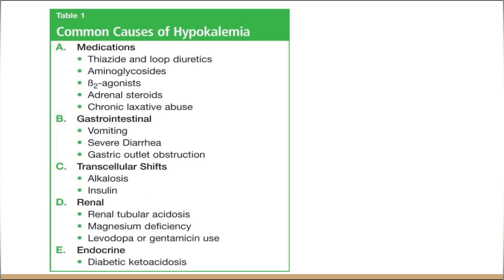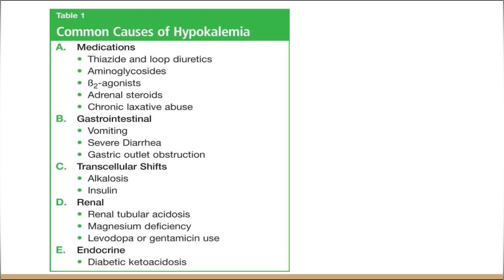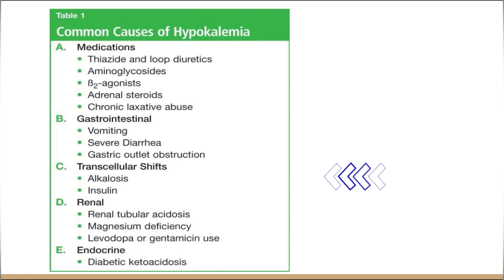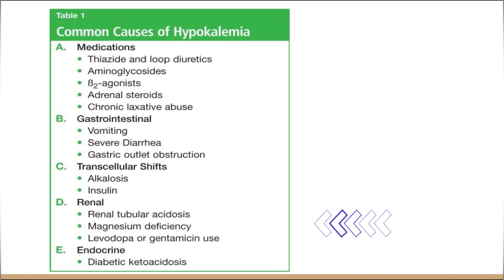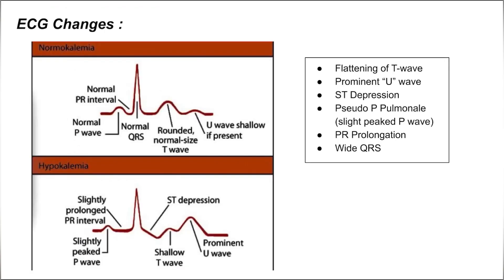Causes of hypokalemia include medications such as loop diuretics and thiazides — these can appear as clues in the clinical stem. Beta-2 agonists are another cause; a patient with bronchial asthma on beta-2 agonists may present with hypokalemia. GI causes include vomiting and severe diarrhea. Transcellular shifts due to alkalosis and insulin are important. Renal causes include RTA type 1 and type 2 — not type 4, which causes hyperkalemia. Endocrine causes include diabetic ketoacidosis.